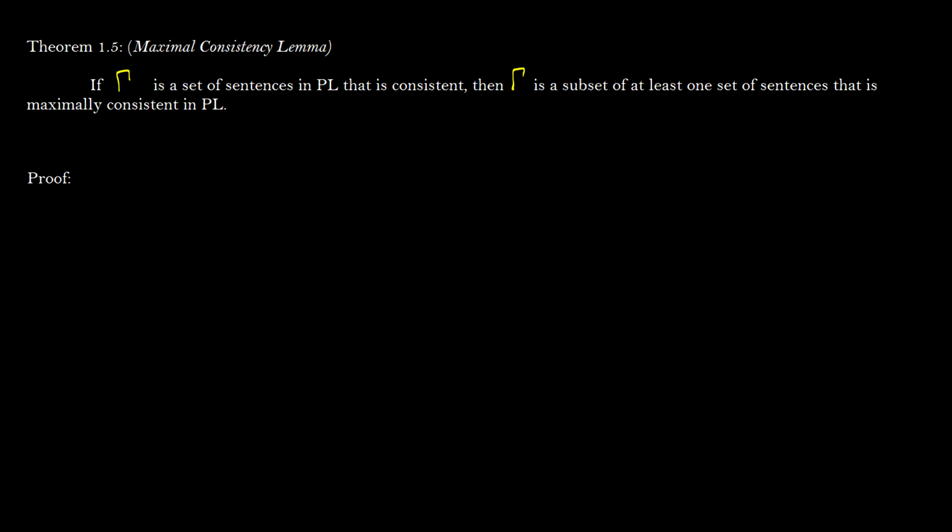Welcome to the third video in our proof of completeness in propositional logic. Today we're going to prove the maximal consistency lemma, which states that if gamma is a set of sentences in PL that is consistent, then gamma is a subset of at least one set of sentences that is maximally consistent.